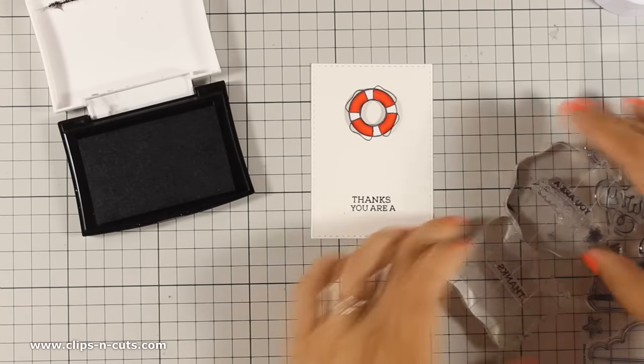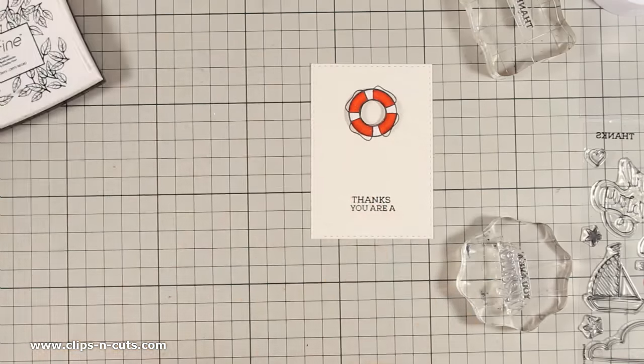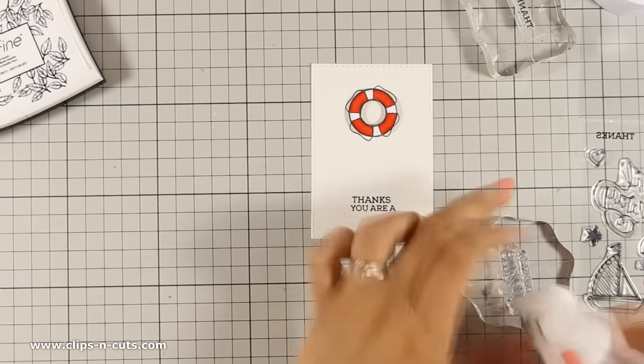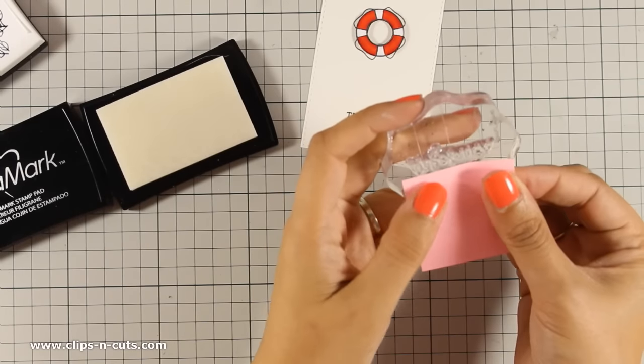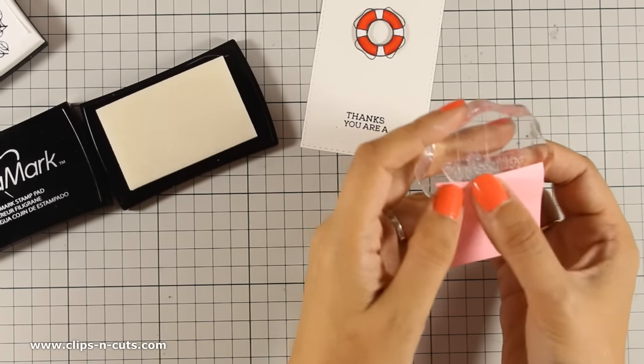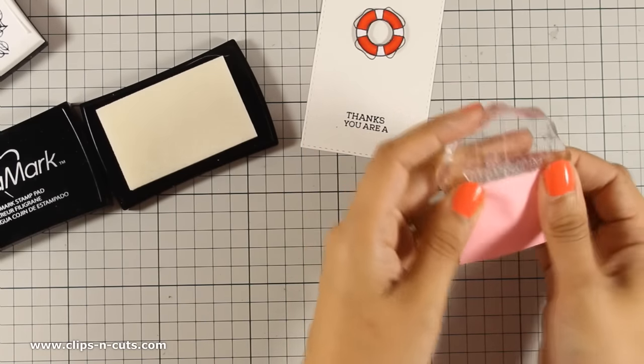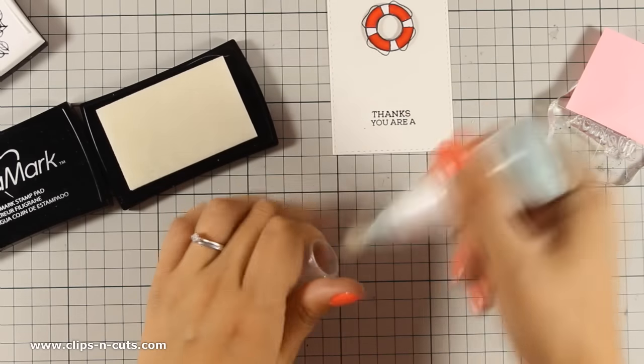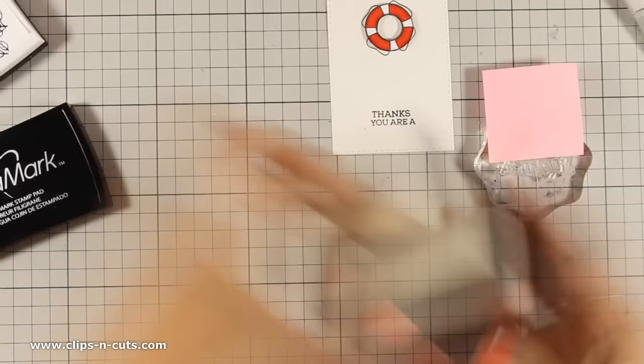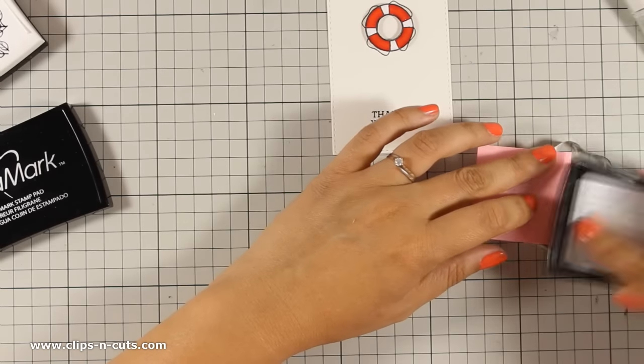And now I can go ahead and emboss the word lifesaver. So I am going to mask out the first sentence just like I did before and I will be stamping it with Versamark ink at the very bottom of my panel so I can then use some red embossing powder. And I will be using red embossing powder because that perfectly matches the red on my lifesaver.